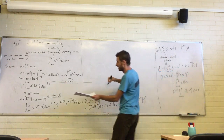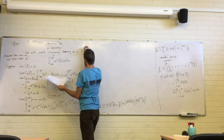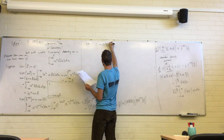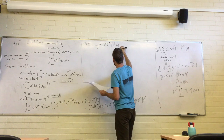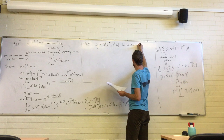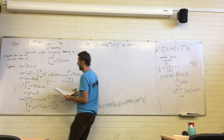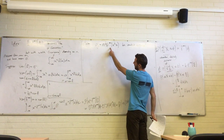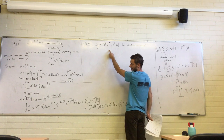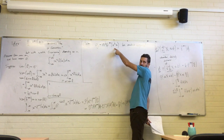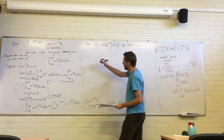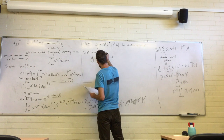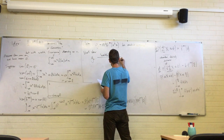The point of working out how variances and things change is to produce a version of this that has constant variance depending on n. We want to take this convolution power gn. The variance goes up by a factor of n from the convolution power, then up by another factor of n from the rescaling, and down by n^(3/2) — so the net effect keeps the variance constant.